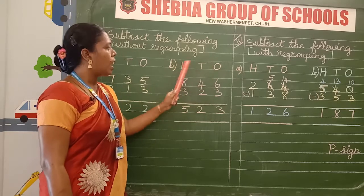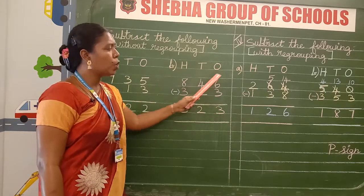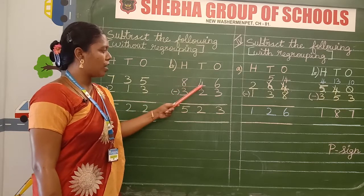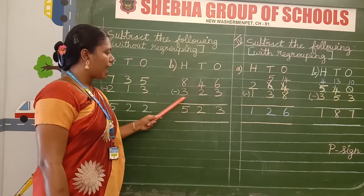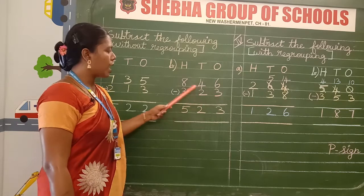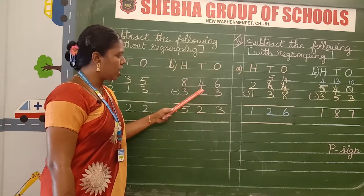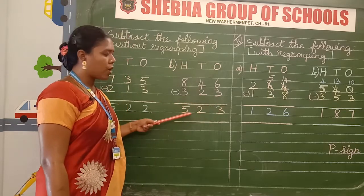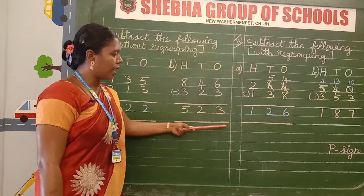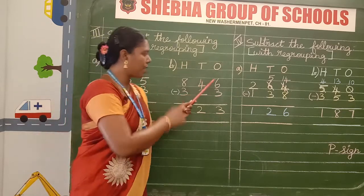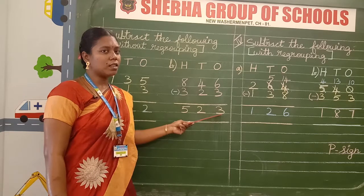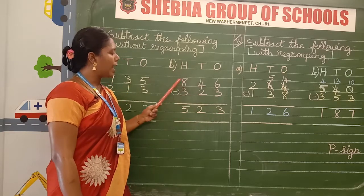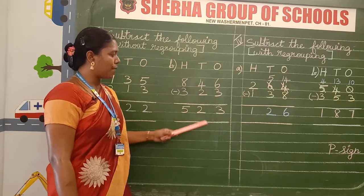Write the B sum using the same method — hundreds, tens, ones — one space value. Leave the line, then write the question: 846. On the next line write 323. Now subtract. After finishing the question, leave the line and draw the line. Center line for the answer, then put another line. How will you subtract? 6 minus 3: answer 3. 4 minus 2: answer 2. And 8 minus 3: answer 5.